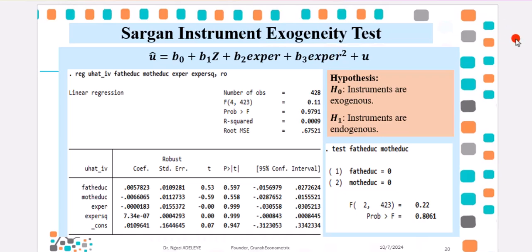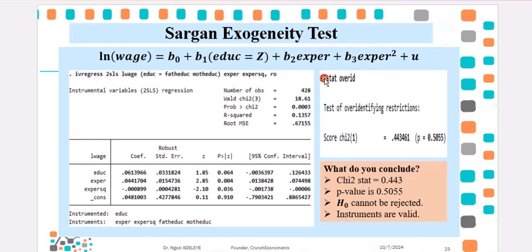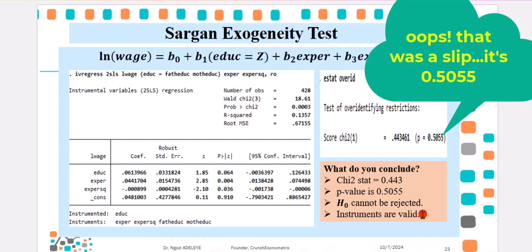Don't forget your hypothesis so that you can know how to interpret correctly. The p-value, don't forget 0.8061, showing that instruments are exogenous, as we cannot reject that null hypothesis. And I showed you that you can straight away use status over ID inbuilt command to test for exogeneity of the instrument. The p-value here is 0.055, showing that we cannot reject that null hypothesis, that the instruments are exogenous, and that the instruments are valid.